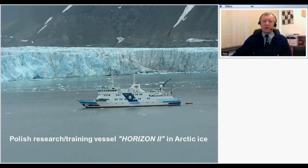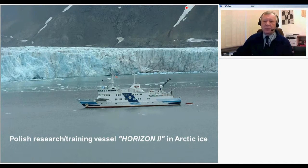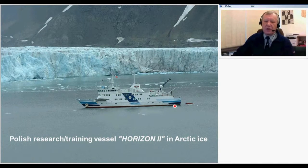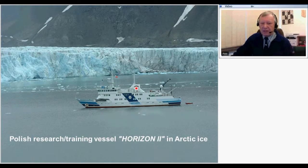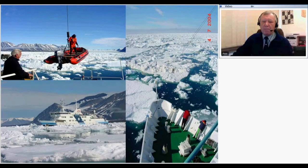Poland also has a research training vessel which every year goes to the Arctic. Sometimes it is our vessel. This vessel has the possibility to take 20 students for training and also 20 researchers. The vessel is 55 meters long and approximately 18 meters high. Here you have the possibility to see the ice barrier on the Hans Glacier. Sometimes the vessel must cross heavy ice pack, also on the North Atlantic and the Barents Sea — this is the situation in 2004.